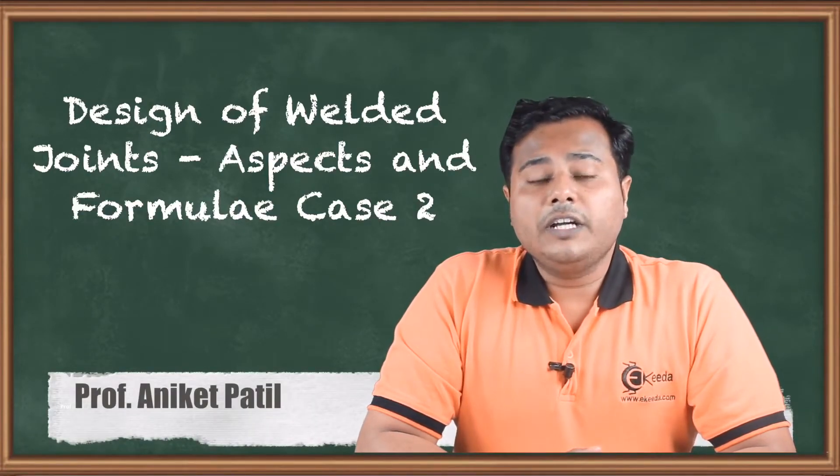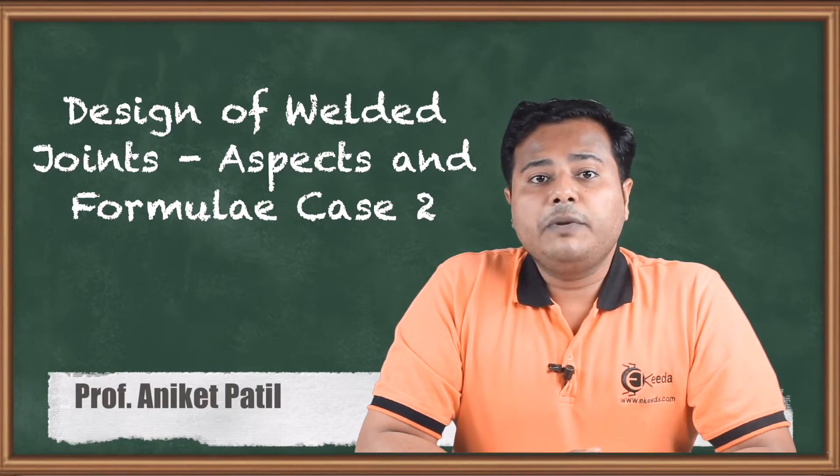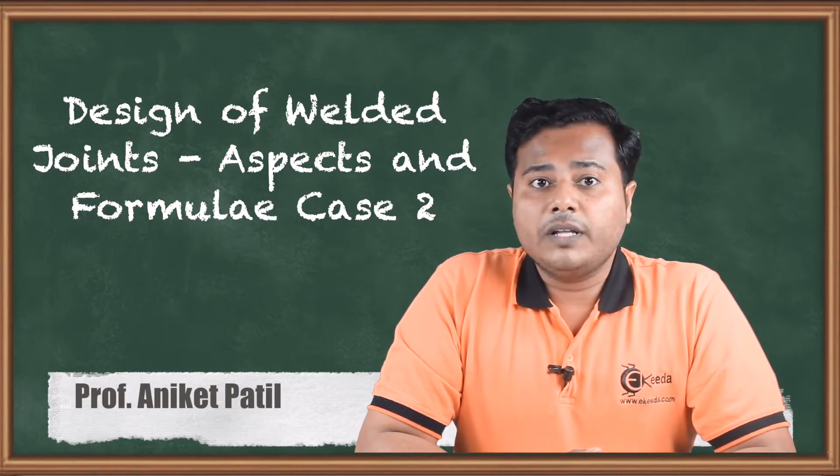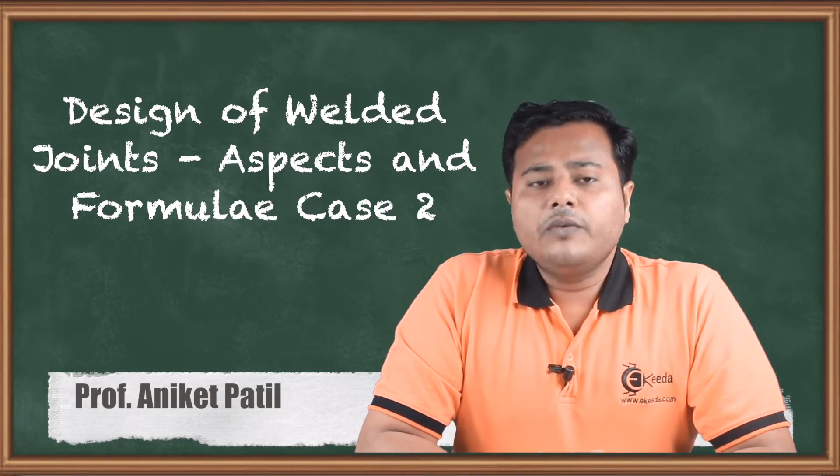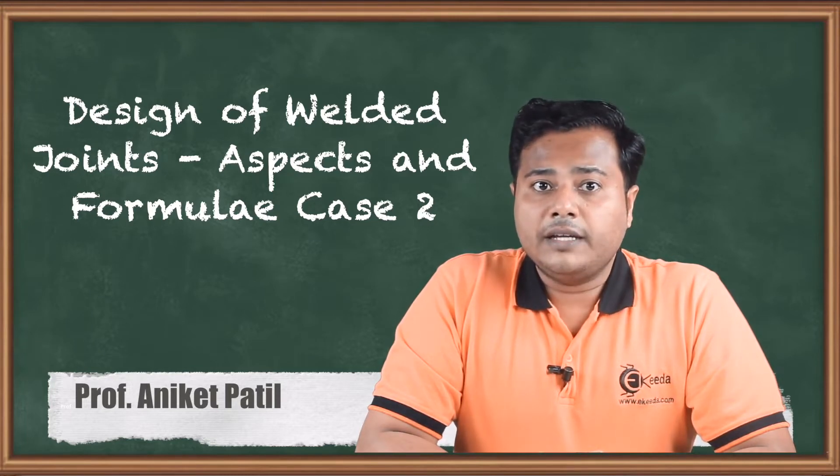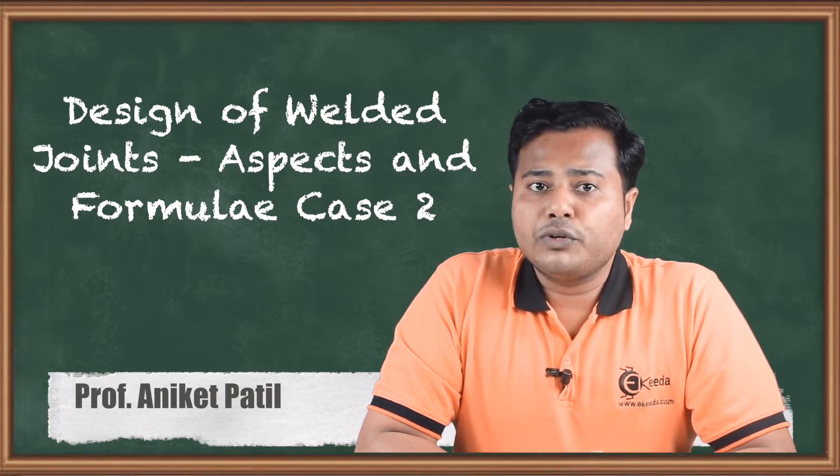We are right now learning about the welded joints. In the previous session we have seen case number 1 where failure occurs because of the primary shear and the secondary shear. Today we are going to look at case number 2 where the shear also happens and there are some few more aspects which we are going to learn.